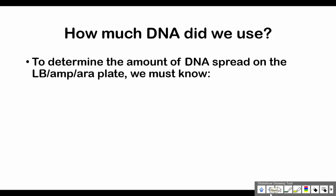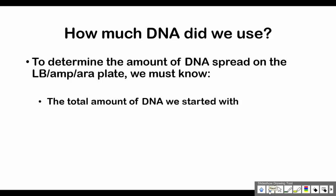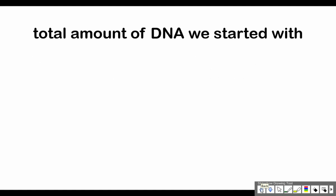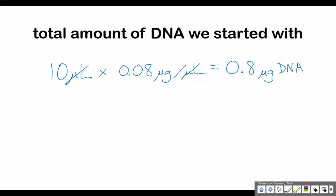To determine how much DNA was spread on the plate, you need to know two things: the total amount of DNA we started with, and what fraction of that DNA got spread onto the LB/AMP/ARA plate. The total amount of DNA is the concentration in micrograms per microliter times the volume in microliters. We used 10 microliters of the pGLO plasmid DNA at 0.08 micrograms per microliter, giving us 0.8 micrograms of DNA total.